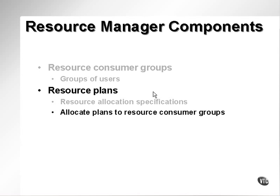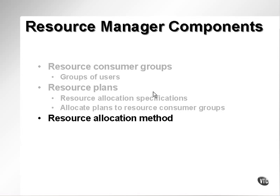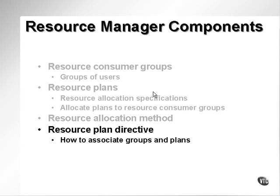What you then do is allocate a resource plan to a resource consumer group, which is allocated to specific users. You also have a resource allocation method — a way in which a resource plan is allocated to a resource consumer group or a group of users. A resource plan directive gives you a method of how to associate groups and plans, how to stick them together.